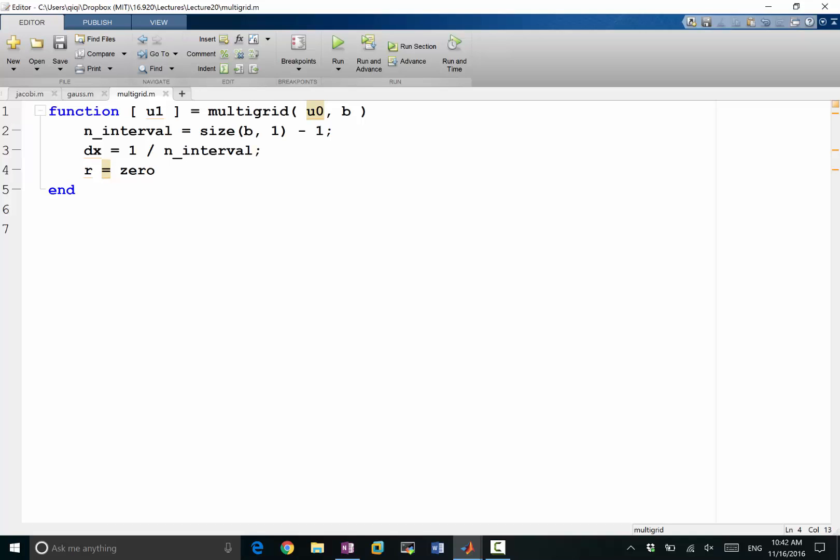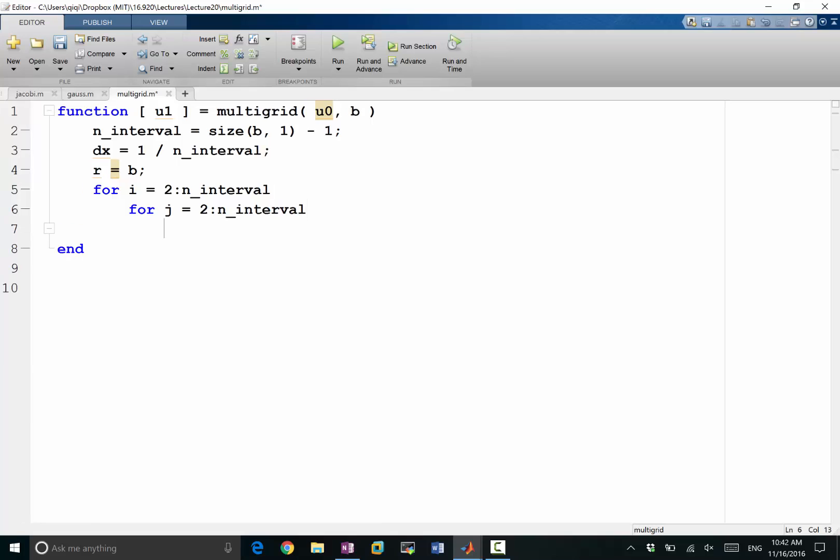The residual is going to be the residual of the Laplace equation. Let's first make it equal to B, and for i goes from 2 to n_interval, for j goes from 2 to n_interval, we are going to say the residual.